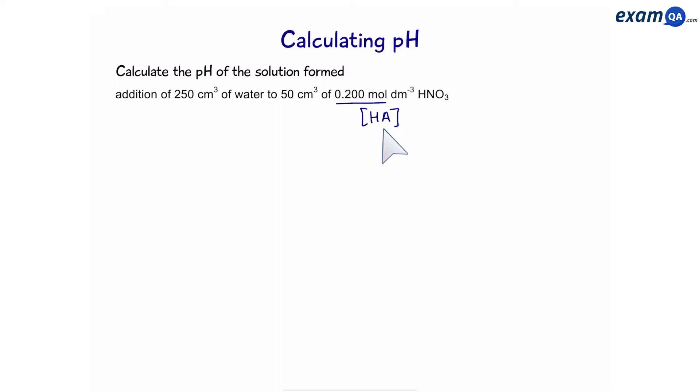So, here we have the concentration of HA, but we can't use this because this is the concentration before it was diluted. The question says, find the pH of the solution formed. So, that means we have to work out the new HA.